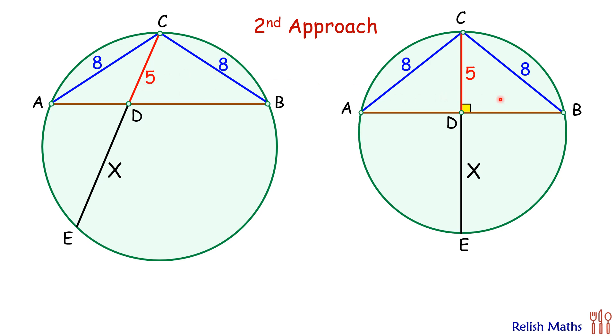So here now it's easier for us to solve as AD and DB we can find with the help of Pythagoras theorem. So DB is square root of 39 and AD is also square root of 39.